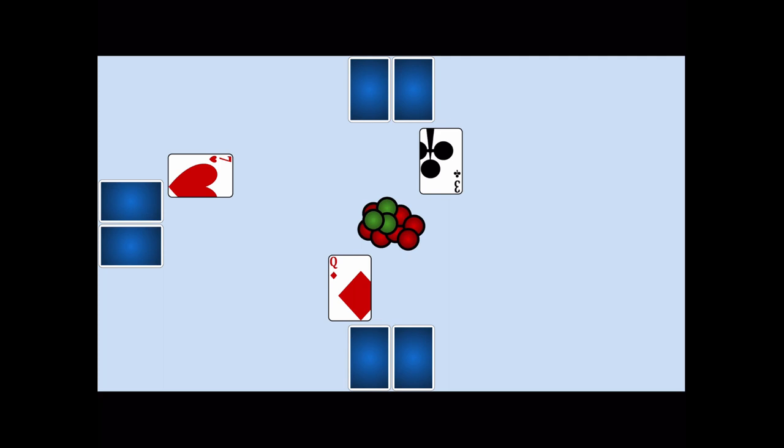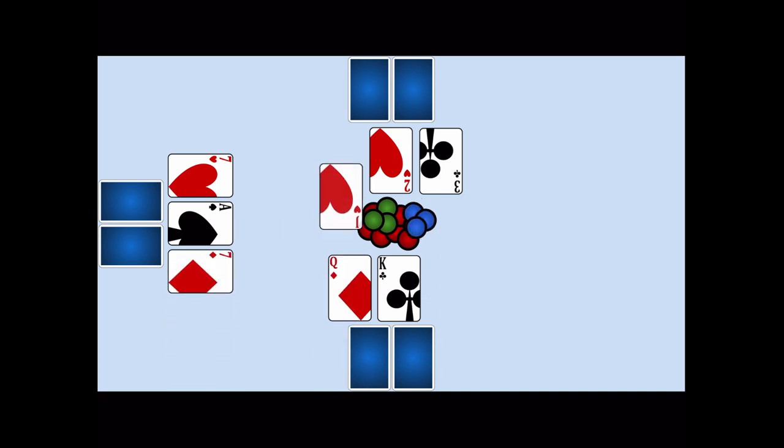After the betting round, each active player is dealt another face up card. A betting round follows and then two more rounds of face up cards and betting after that.